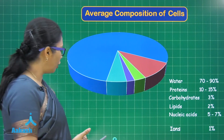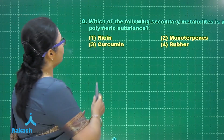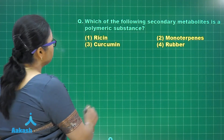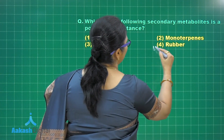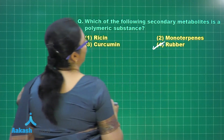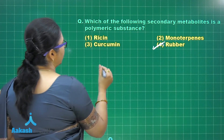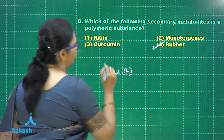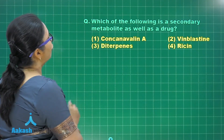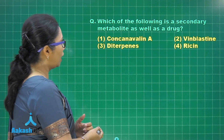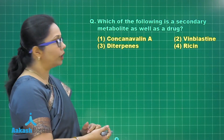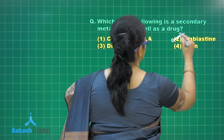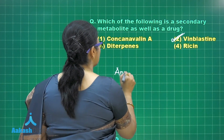Let's solve a few questions. Which of the following secondary metabolite is a polymeric substance? We saw that rubber, gums, and cellulose are in the category of polymeric secondary metabolites, so the answer is option four. Another question: which of the following is a secondary metabolite as well as a drug? All four substances given are secondary metabolites, but the one that is specifically a drug is vinblastine. The answer is option two.